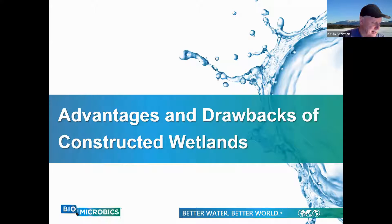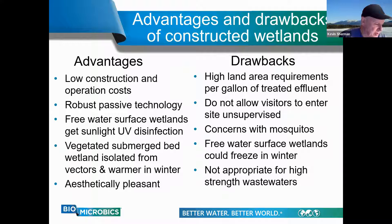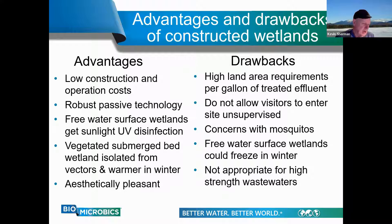There are advantages and drawbacks to the constructed wetland system. Advantages are in the left-hand column and disadvantages in the right. Freezing concerns, mosquitoes, keeping unsupervised visitors away, and UV disinfection by sunlight are all attributes of the free water surface wetland. Both constructed wetland types require lots of land, are aesthetically pleasing and robust, and are inexpensive to construct and operate by hard-working but less trained individuals. Neither type is a good fit for treating high-strength wastewaters or on very small lots.